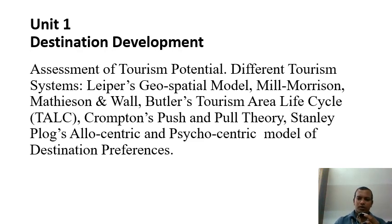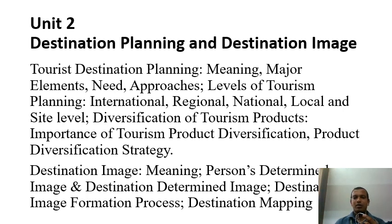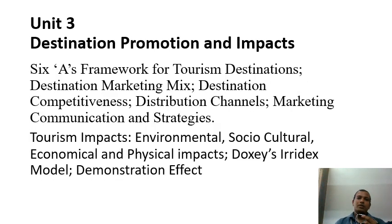The second unit is completely focused on destination image and destination planning, covering three approaches: regional, national, and international levels of tourism planning. It discusses how different products and services are considered, how product diversification works, and the concept of destination as a host. The unit also covers how destination image is created, how customers perceive a destination, how customers receive a service, and destination mapping using a 6A framework.